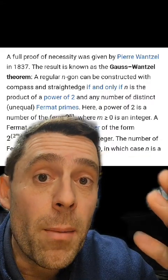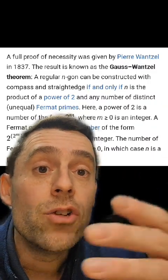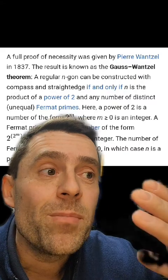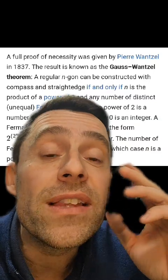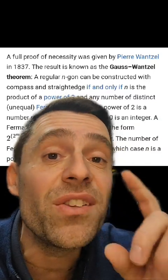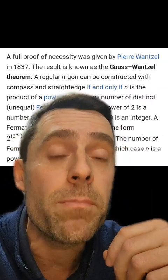17 is a Fermat prime, 65,537 is a Fermat prime, so those are all constructible polygons, but we don't know any more Fermat primes. So for the time being, the 65,537-sided polygon is the bestagon.